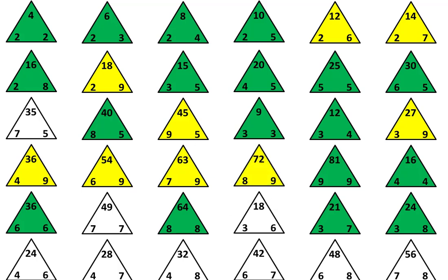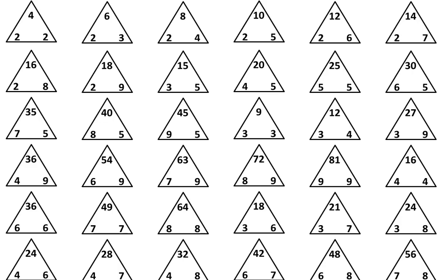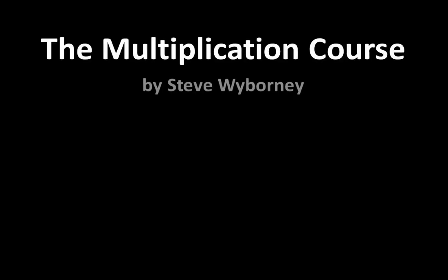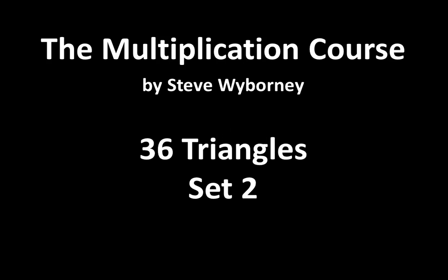You may also try doubling and halving with facts you don't know yet. For example, instead of 4 times 6, think of it as 2 (half of 4) times 12 (double 6) — 2 times 12 is equal to 24, so 4 times 6 is also equal to 24. Now it's your turn: work through these relationships, covering them with paper, thinking about them carefully, shading in the ones you are becoming familiar with, and looking for new ideas. This is the Multiplication Course — my name is Steve Wyborny, and this is 36 Triangles Set 2.